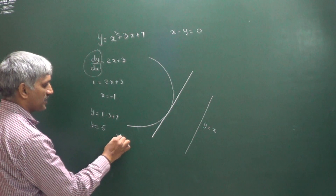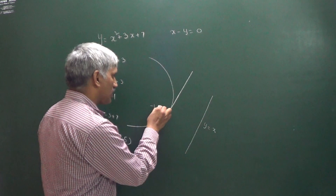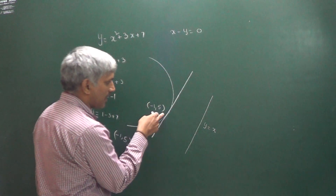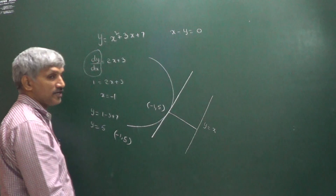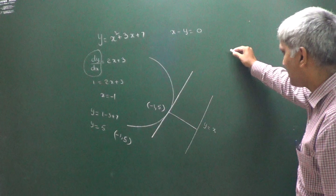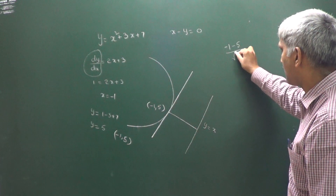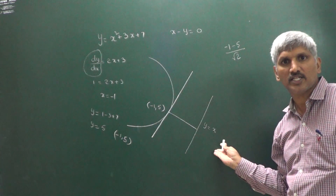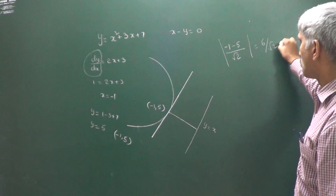We got the point (-1, 5). From this point onto the line x - y = 0, we find the perpendicular distance. That perpendicular distance is the minimum distance. Using the distance formula: |(-1) - 5| / √(1² + 1²) = 6 / √2 is the answer.